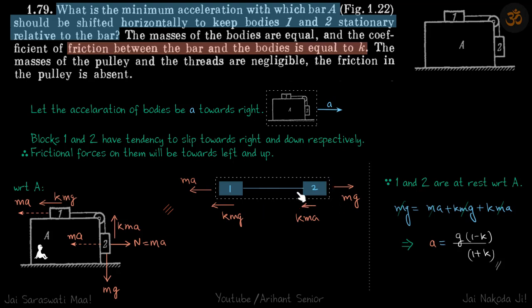So the system must be at rest, which means MG is equal to MA plus KMG plus KMA, which gives the value of acceleration.